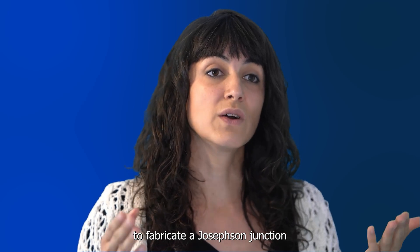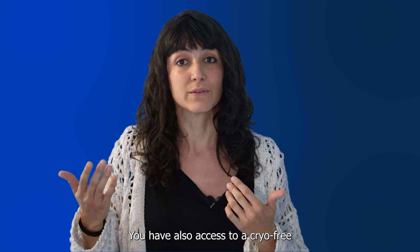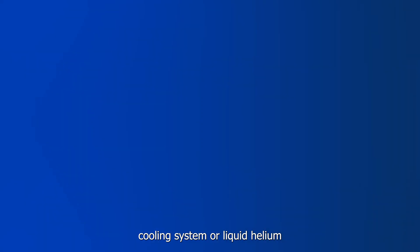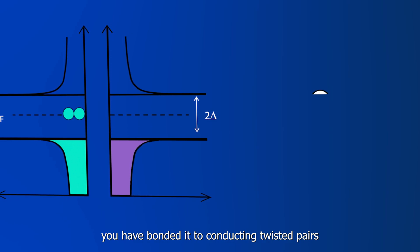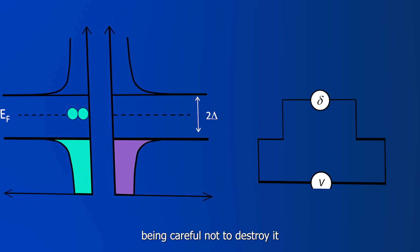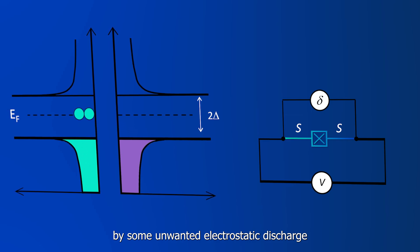Let's assume you have managed to fabricate a Josephson junction. You have also access to a cryo-free cooling system or liquid helium. Before cooling your junction down, you have bonded it to conducting twisted pairs, being careful not to destroy it by some unwanted electrostatic discharge.